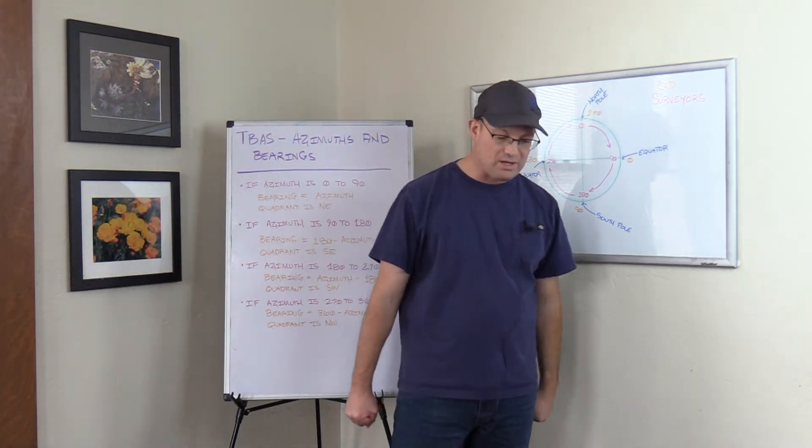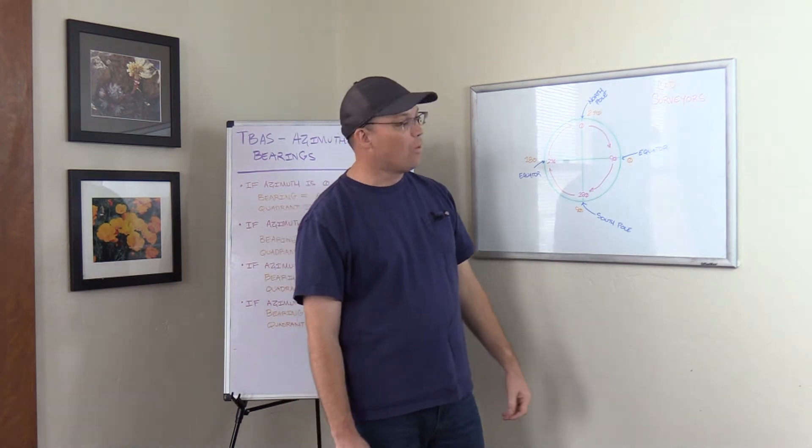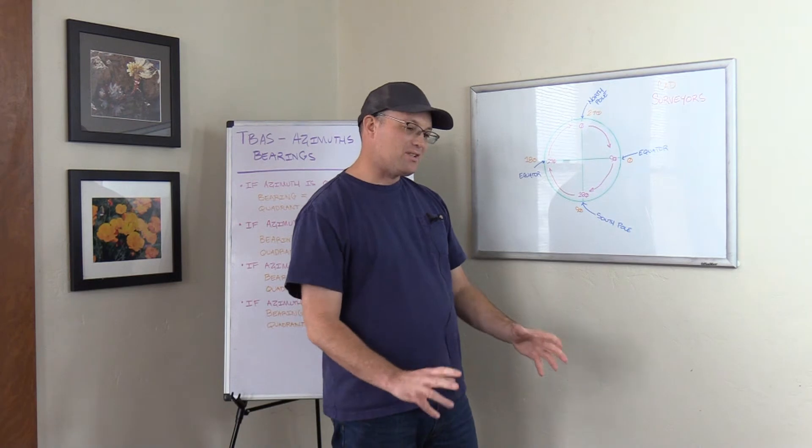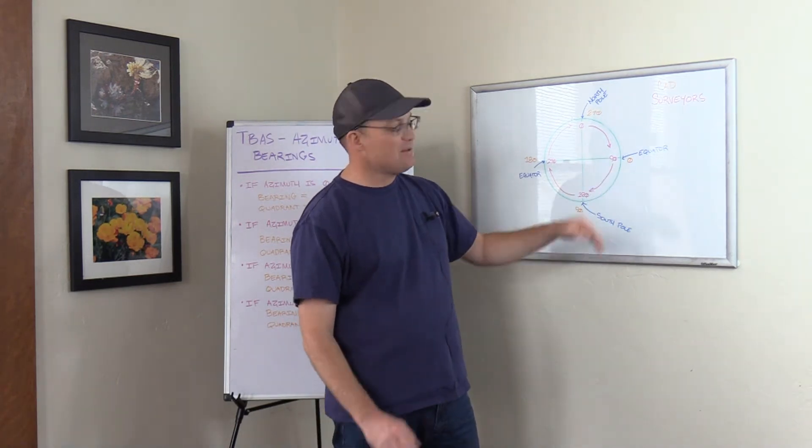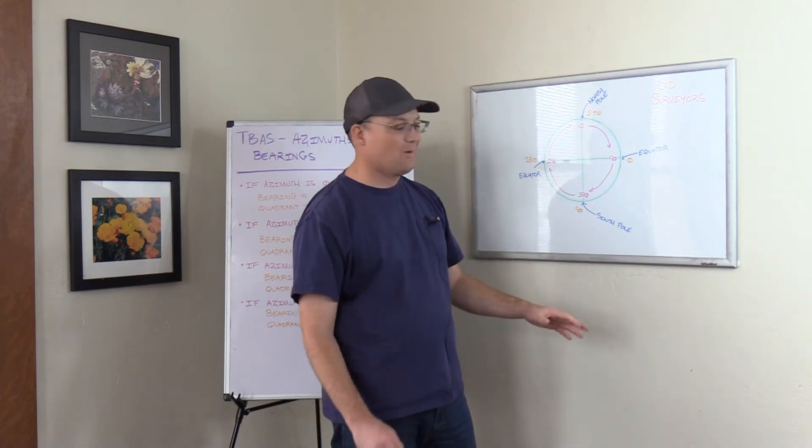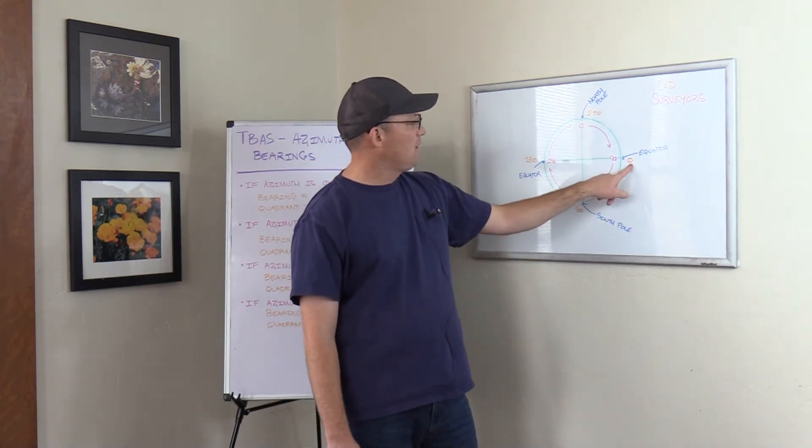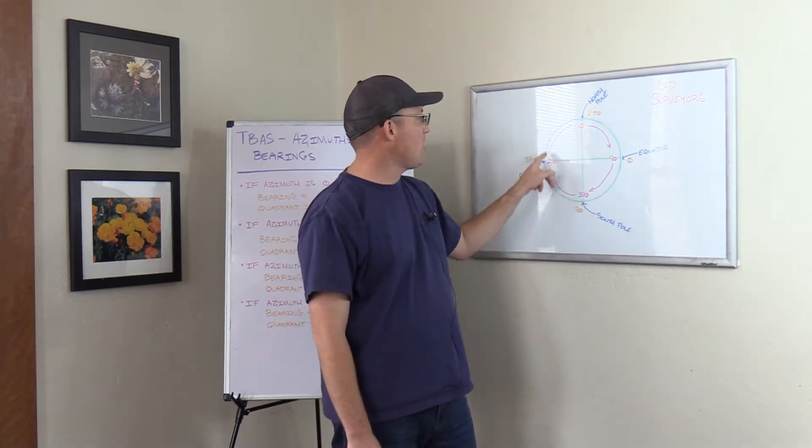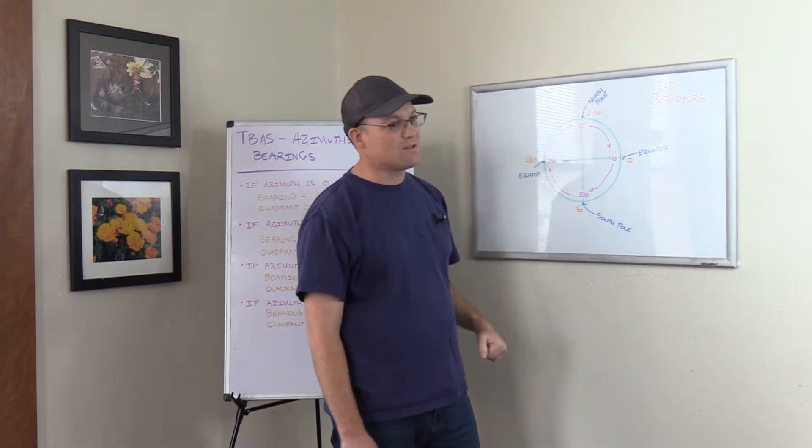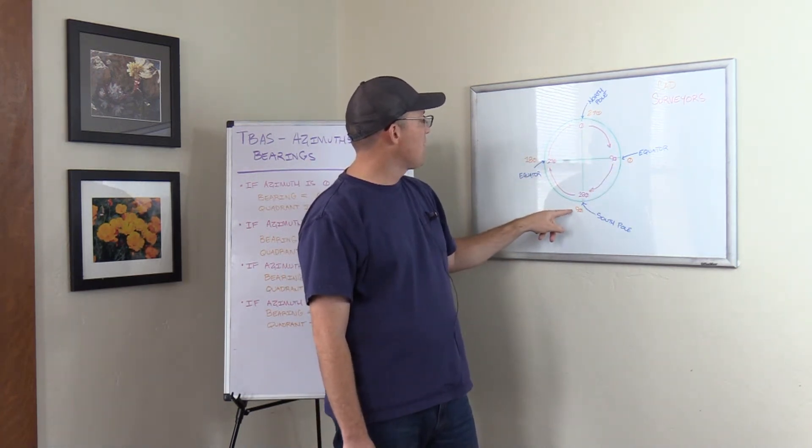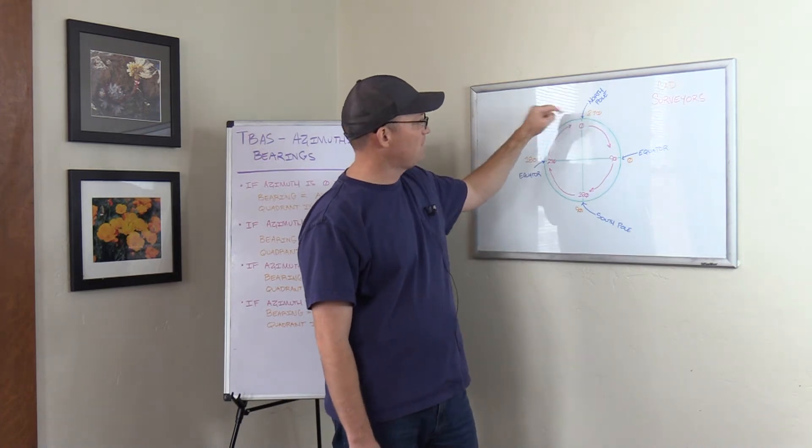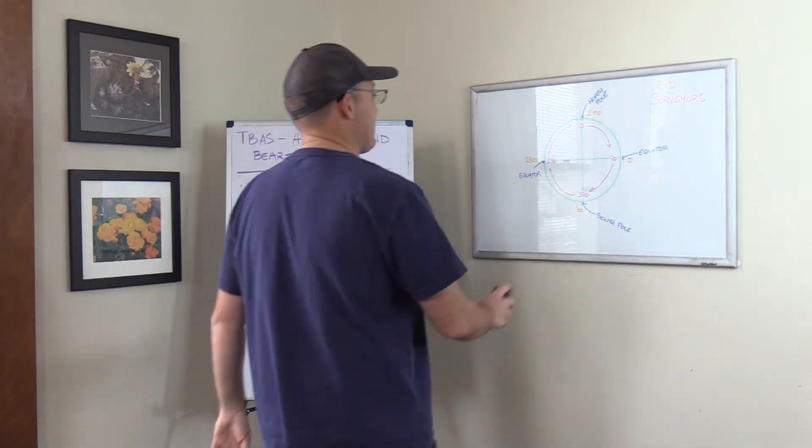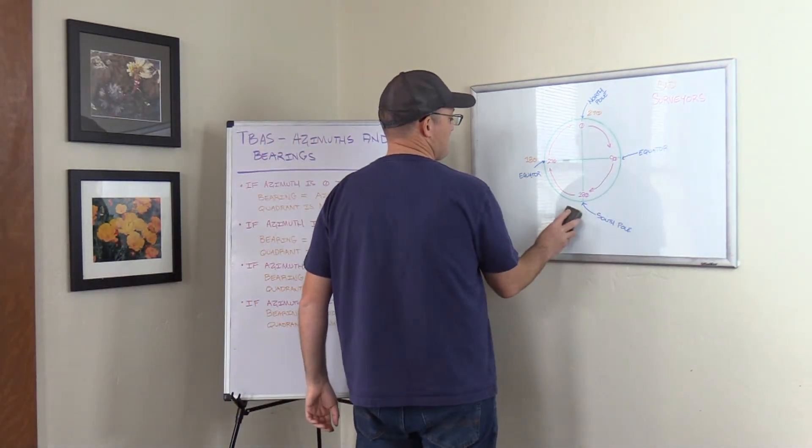For those of you that are either taking a math class or that work in CAD, a lot of surveyors work in CAD, the default coordinate system that's set up in most CAD programs, and this is because it's a mathematician thing. Mathematicians do everything the hard way. They put zero right here on the right side of the page at the equator. They still measure clockwise, but they're shifted 90 degrees to the right. There's zero here, 90 here, 180 here, 270 up at the top.